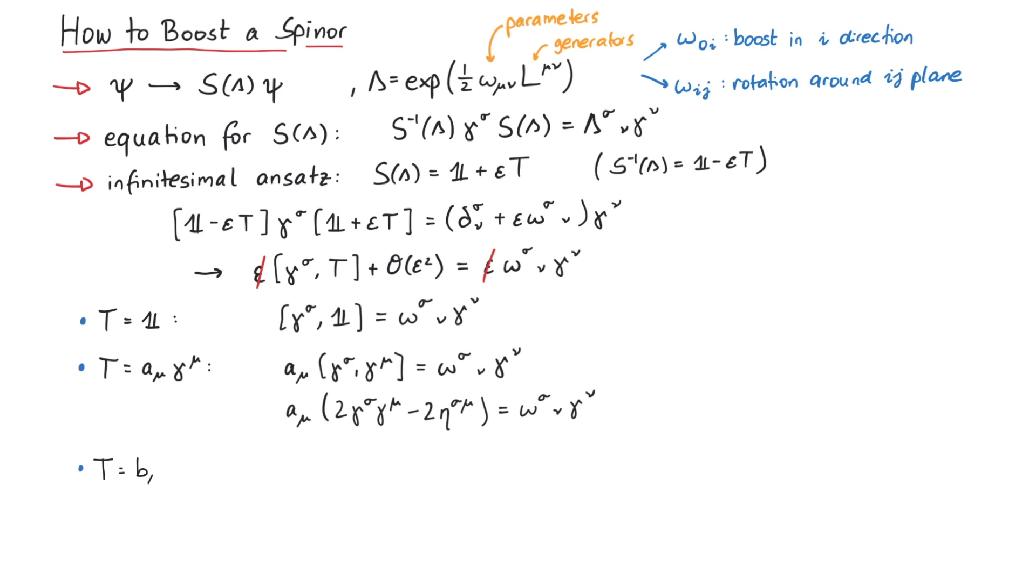Next, let's try two gamma matrices. This takes some time, but by using this ansatz, the equation can be solved by b mu nu equals 1 over 4 omega mu nu. By convention, one usually denotes this using the commutator of gamma matrices, since omega is antisymmetric anyway. Therefore, we get an additional factor of one half.